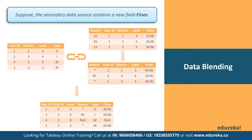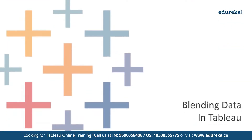How can you blend your data? You can use data blending when you have data in separate data sources that you want to analyze together on a single sheet. The following demo demonstrates how to blend data from two different sources. I'll be using two data sources: the Sample Superstore, which is included in Tableau's sample datasets, and the Sample Coffee Chain, another easily available dataset for Tableau.